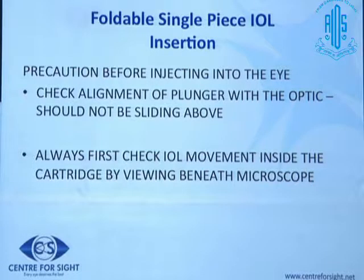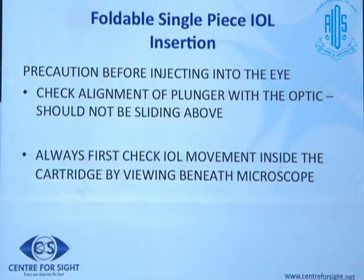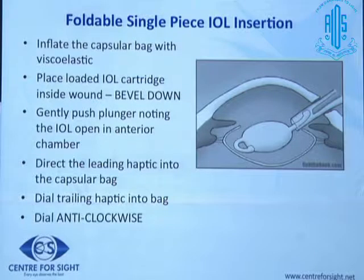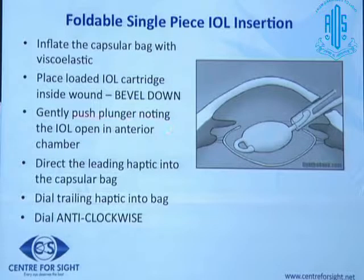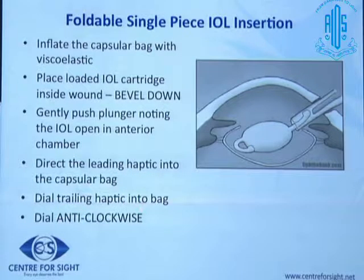When going into the eye, enter bevel down to avoid capsule detachment, then change the bevel as you position the lens. Gently push the plunger, noting that the IOL is opening in the anterior chamber. Direct the leading haptic into the capsular bag, then dial the trailing haptic into the bag, dialing anti-clockwise.